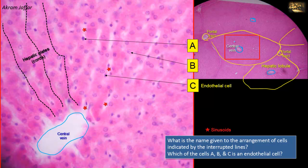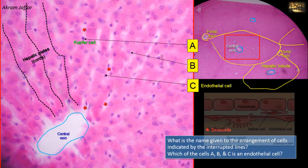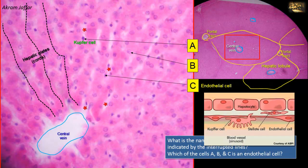Cell A also lines the sinusoids but has an ovoid nucleus and is less numerous than the endothelial cell. Cell A, with the ovoid nucleus, is a Kupffer cell. They are scattered among the endothelial cells, less numerous, and are phagocytic cells forming part of the monocyte-macrophage defense system. They participate in the removal of senile erythrocytes, toxic substances, and other particulate debris from the circulation.